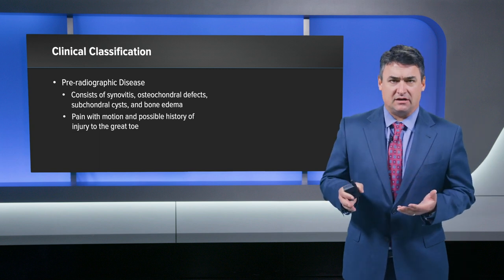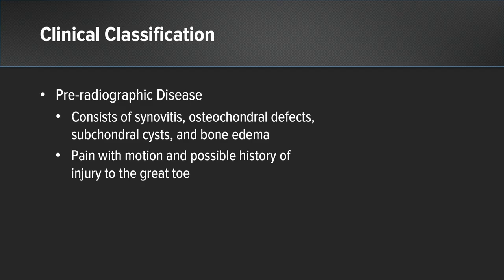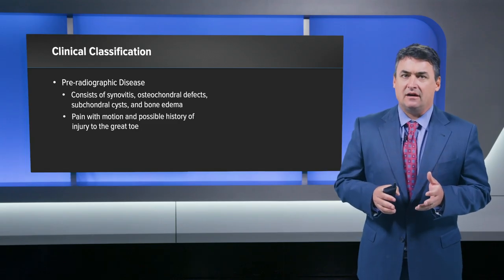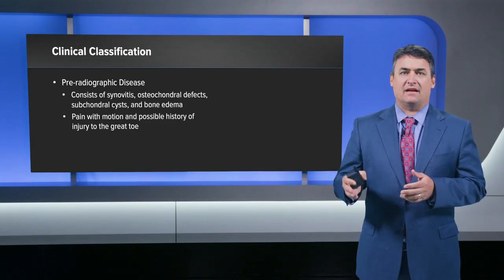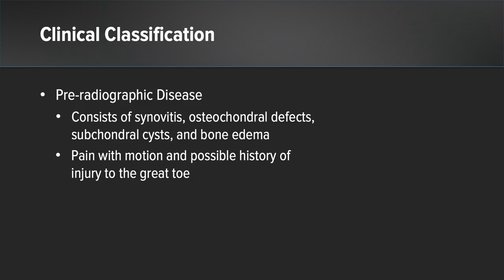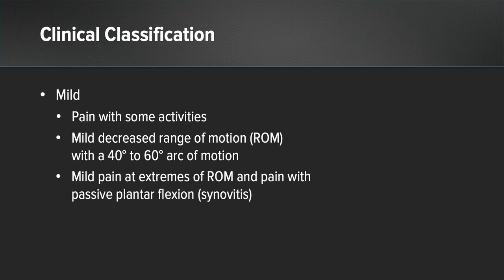In terms of clinical classification, pre-radiographic disease consists of synovitis, osteochondral defects, subchondral cysts, and bone edema. These often aren't visible on x-ray and require advanced imaging such as MRI or CT scan. Patients will have pain with motion and possibly a history of injury to the great toe. Mild disease presents with pain with some activities, a mild decrease in range of motion with an arc between 40 and 60 degrees, and mild pain at the extremes of motion.